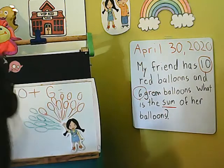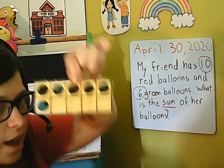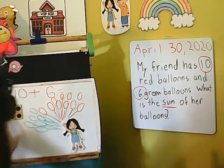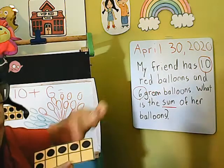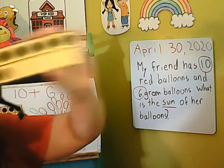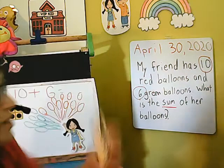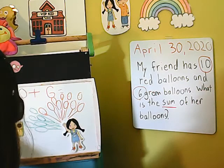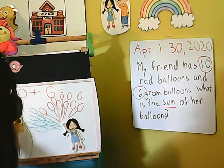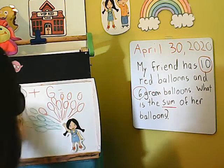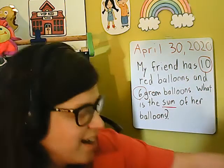Ten red balloons and six green balloons. You may be able to look at this and say, "Oh Miss Wilkerson, that's six" — it has six dots and four spaces — if you have been working with your ten frames. So ten and six, let's count them together. First we'll count our balloons, then we'll count our ten frames and see if they match. They should match.